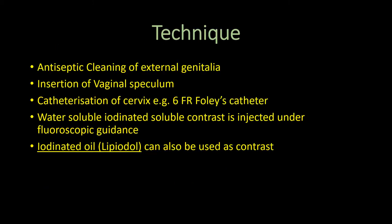Hysterosalpingography is performed in the initial 5 to 10 days of the menstrual cycle, when the uterine wall is comparatively thin. After antiseptic cleaning of the external genitalia, the vaginal speculum is inserted. Then catheterization of the cervix is done, preferably using a 6-Fr Foley's catheter.